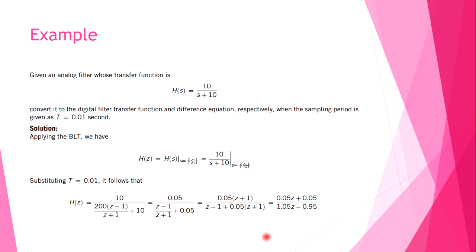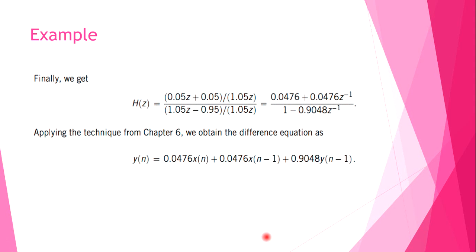Finally, dividing both numerator and denominator by 1.05Z, we transform our equation into Z^(-1) form.